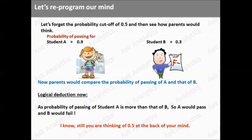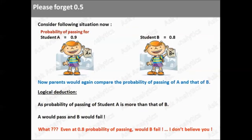But, I know, you are still thinking about 0.5 cutoff probability. So, let's take it with another example. Now, teacher said, the probability of passing for student A is 0.9 and that for student B is only 0.8. It's not only, it's 0.8. It's very high. Now, what would you think? I know, you are going to think that both student A and B will pass.